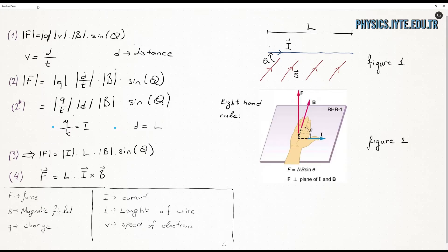As we know, speed is displacement of a body per unit time, so we can write V as D over T. Similar to the definition of speed, current is the amount of charges that passes through a point on a wire per unit time, which means current equals Q over T. And finally, our equation takes the form of equation 3.